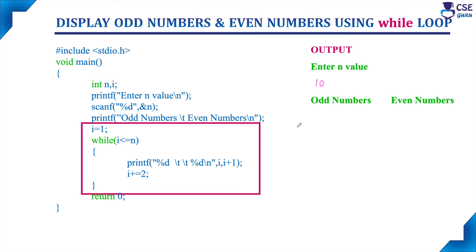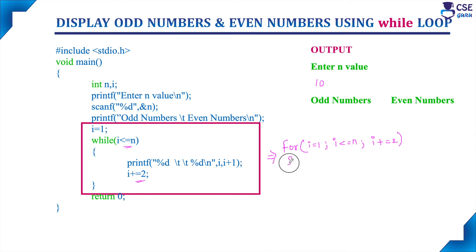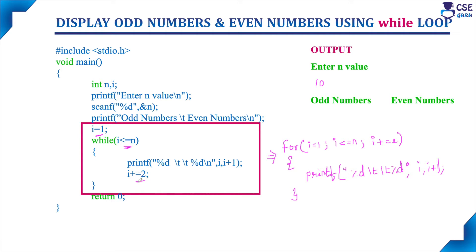The same program to display odd numbers and even numbers we traced with the logic using for loops; now we are implementing with while loop. The equivalent for loop is: initialization i equals 1, condition i less than or equal to n, loop updation i plus equal to 2, and then the body of the loop is printf. The main difference between for loop and while loop is: in while loop, initialization, condition evaluation, and loop updation are three separate statements, whereas in for loop all three are done in one single statement.